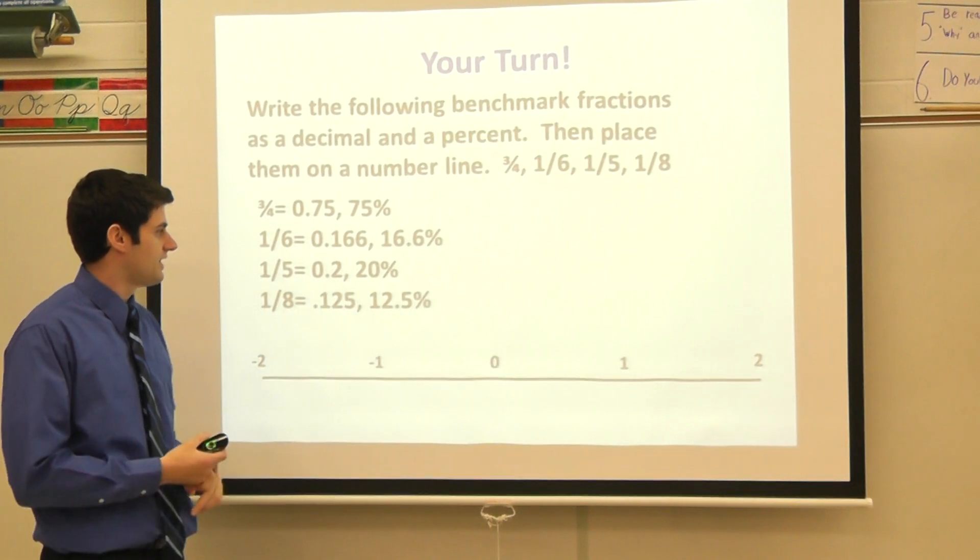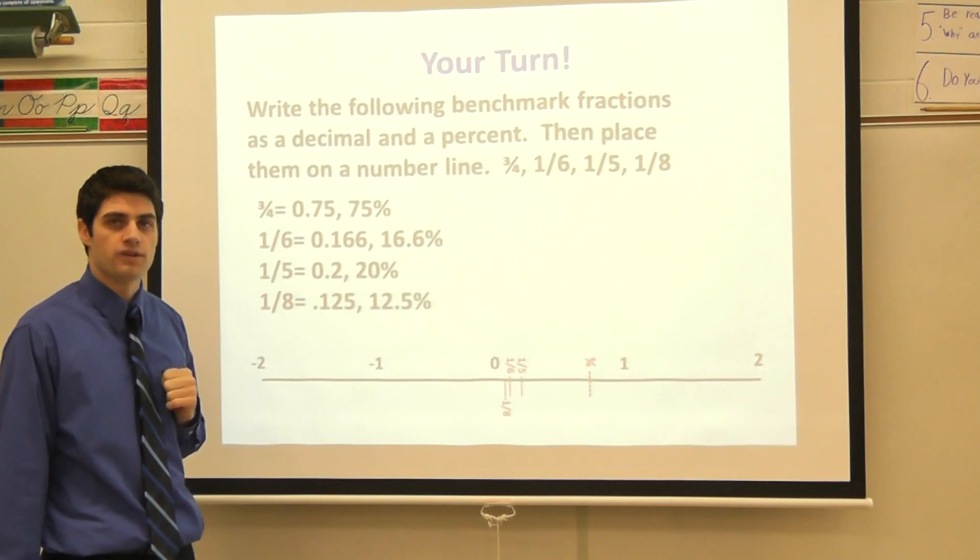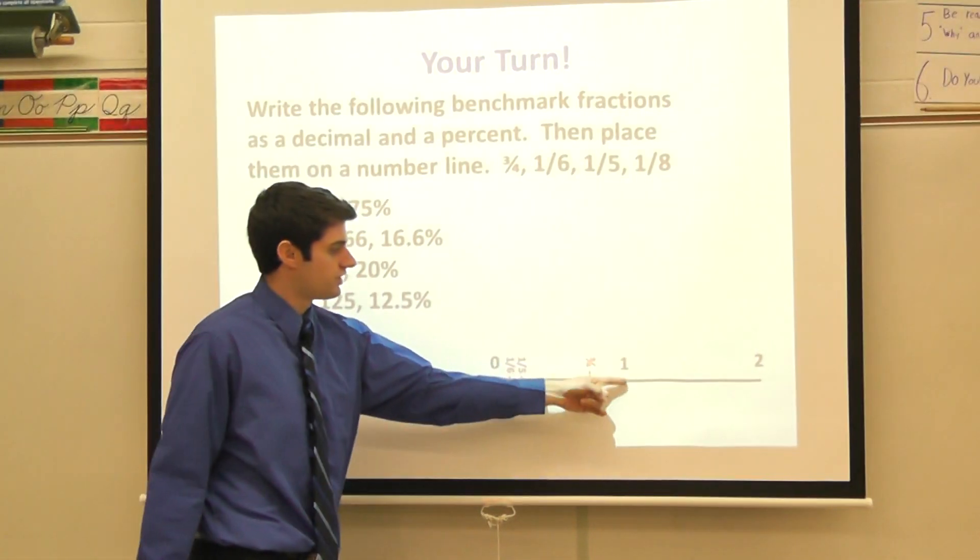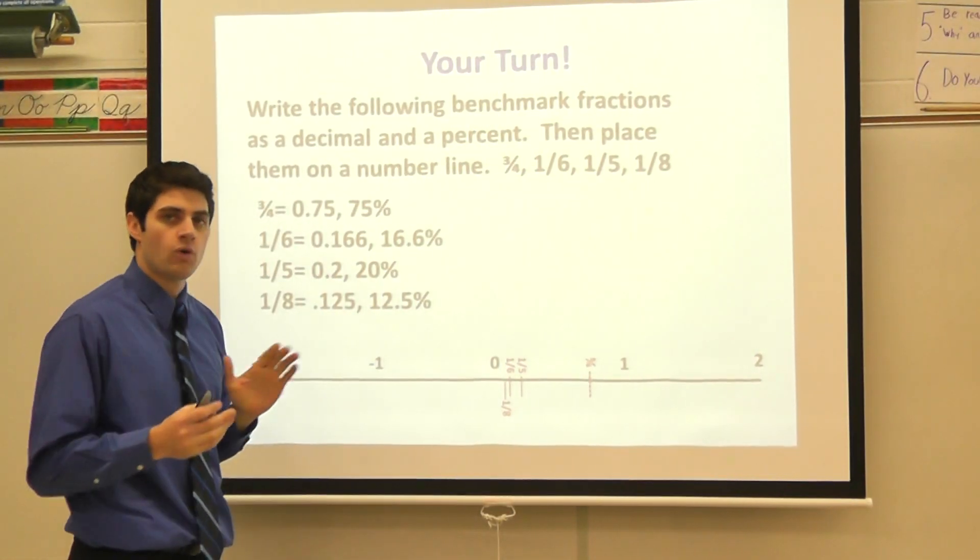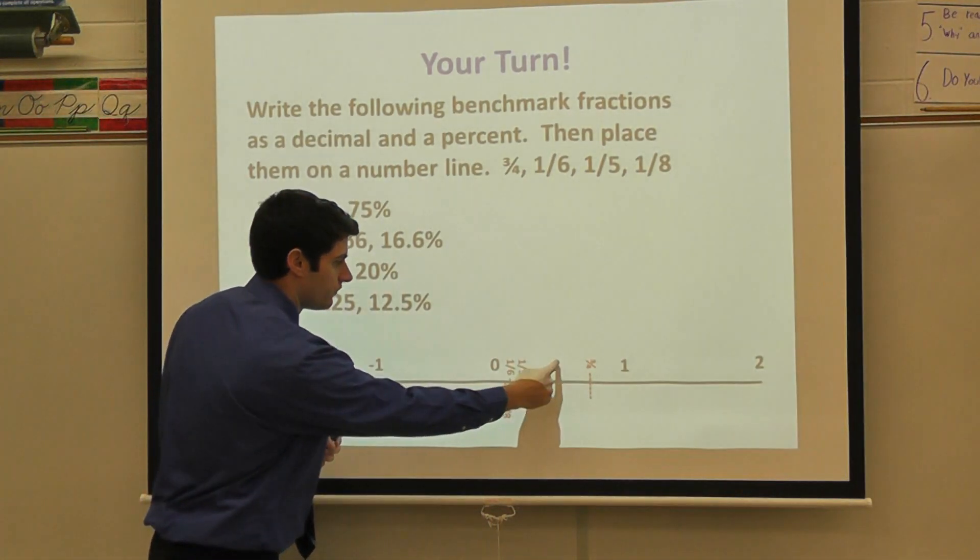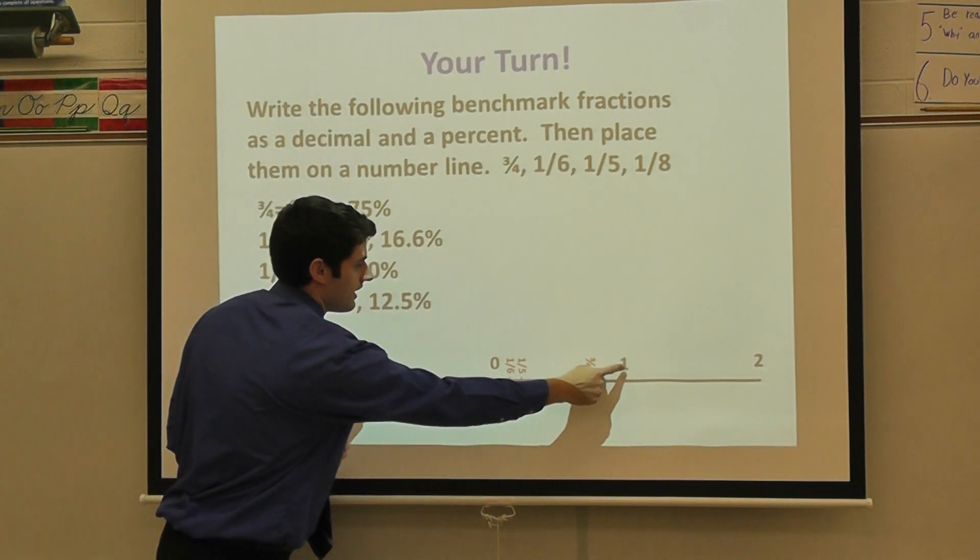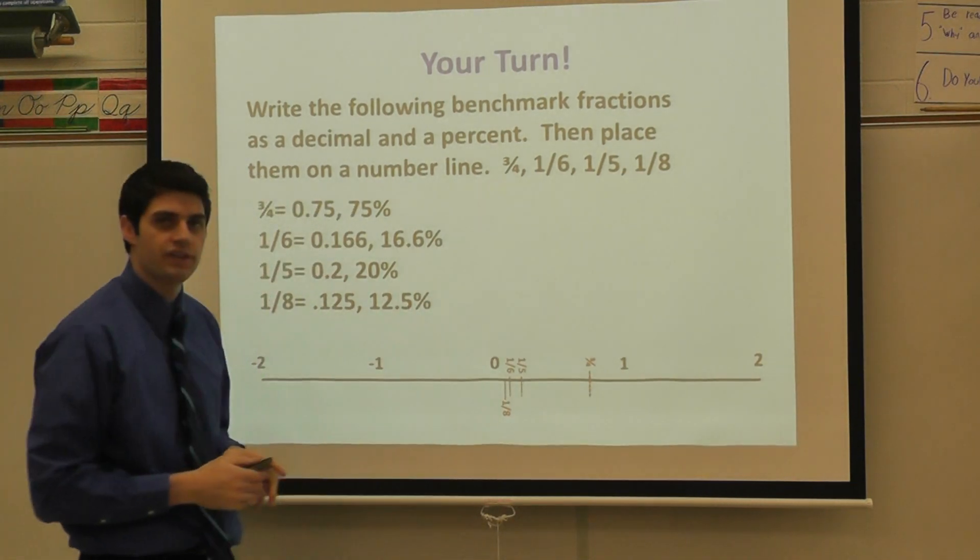All right, we have our number line that kind of pops up here. And let's take a look. I'm going to start with 3 fourths. Again, I know 4 fourths is a whole, so I'm going to break this up into four equal parts. So 1 fourth would be about there. 2 fourths would be half. 3 fourths would be halfway between a half and a whole. So 3 fourths would fall about there on my number line.